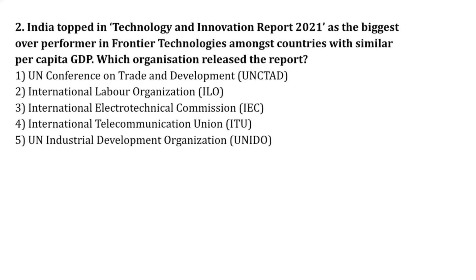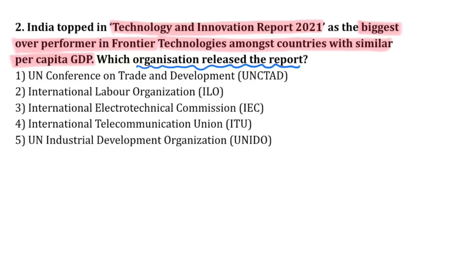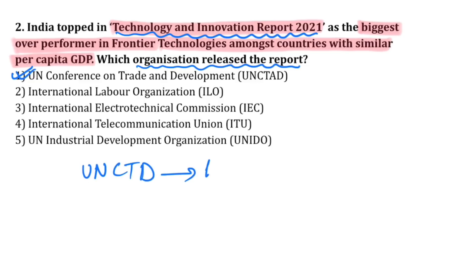Next question: India topped the Technology and Innovation Report 2021 as the biggest overperformer in frontier technologies among countries with similar per capita GDP. The report was released by UNCTAD — that is, the United Nations Conference on Trade and Development. The headquarter of UNCTAD is in Geneva, Switzerland.